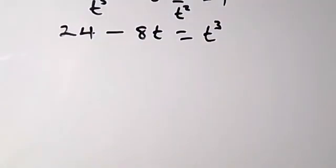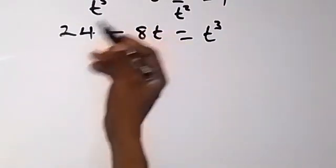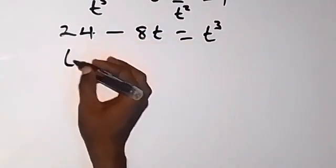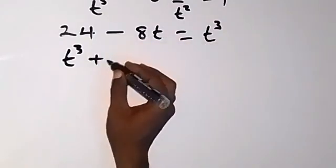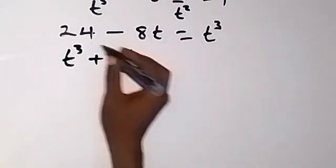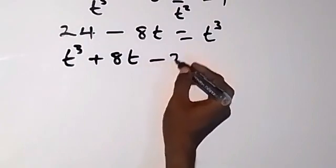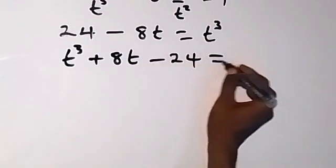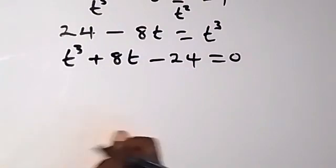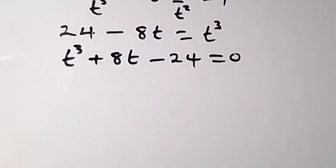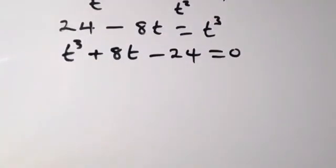Let's use this to form an equation and bring everything to one side. We have t raised to power 3, then minus 8t comes, then minus 24 equals zero. Now we have an equation of degree 3 which we can solve by testing a value.